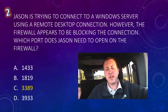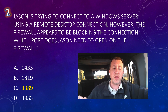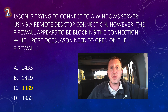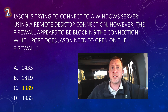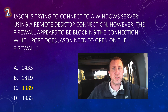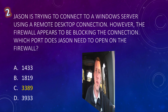Question two: Jason is trying to connect to a Windows server using a remote desktop connection, but the firewall appears to be blocking the connection. Which port does Jason need to open on the firewall? Port 1433 is for Microsoft SQL Server. Port 1819 is a random number. Port 3389 is for the Remote Desktop Protocol — that's the one we're looking for. It is a Microsoft proprietary connection. Port 3933 is also just a random number. So 3389 is the answer. Let's move on to question three.